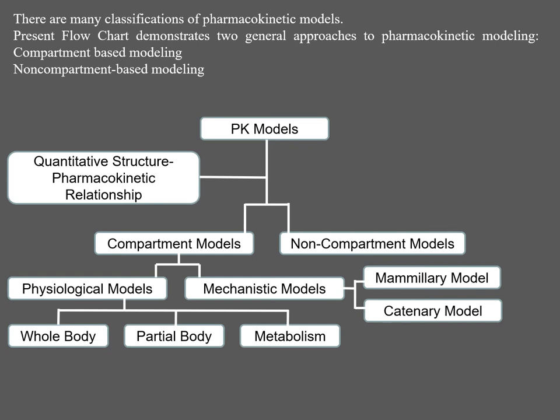Compartment models are divided into two types: one is physiological model, the other is mechanistic model. Physiological models are further divided into three types: whole body model, partial body model, and metabolism model. Mechanistic models are divided into two types: mammillary model and catenary model. That's all about the classification.